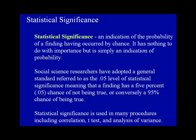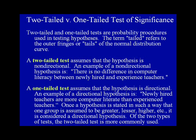Two-tailed versus One-tailed Test of Significance. Two-tailed and one-tailed tests are probability procedures used in testing hypotheses. The term tailed refers to the outer fringes or tails of the normal distribution curve. A two-tailed test assumes that the hypothesis is non-directional. An example of a non-directional hypothesis is: there is no difference in computer literacy between newly hired and experienced teachers. A one-tailed test assumes that the hypothesis is directional. An example of a directional hypothesis is: newly hired teachers are more computer literate than experienced teachers.